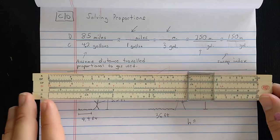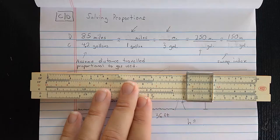So when you set the slide, you set that ratio, and then anywhere you read the cursor, it reads the same ratio.